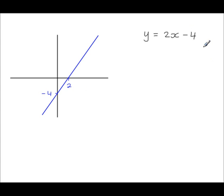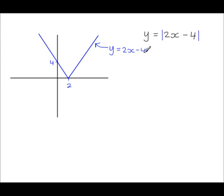And then we can go from here to the modulus of this. So now we have the graph y equals the modulus of 2x minus 4. This part of the graph was not reflected, so it has the equation y equals 2x minus 4. This side was reflected, and you have to change the signs throughout on the right-hand side. So y equals minus 2x plus 4, which makes sense because the gradient here is negative and the y-intercept, which was minus 4, is now plus 4.